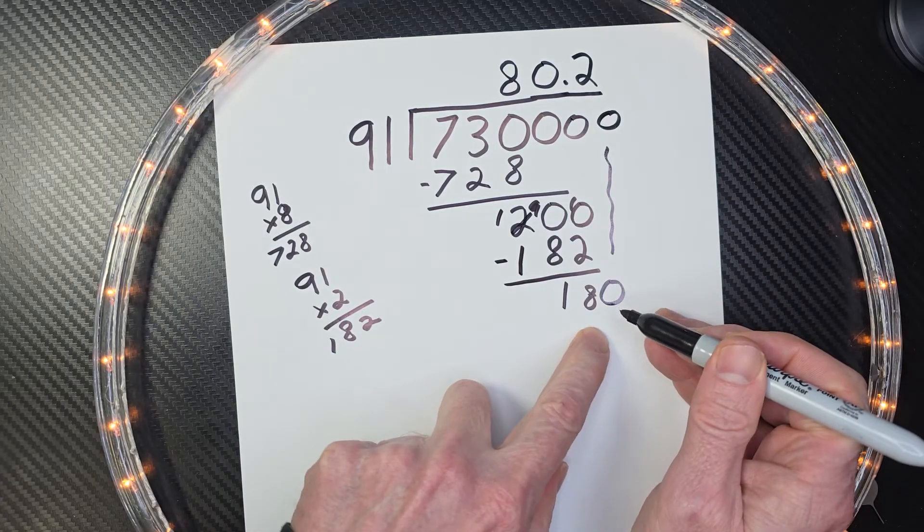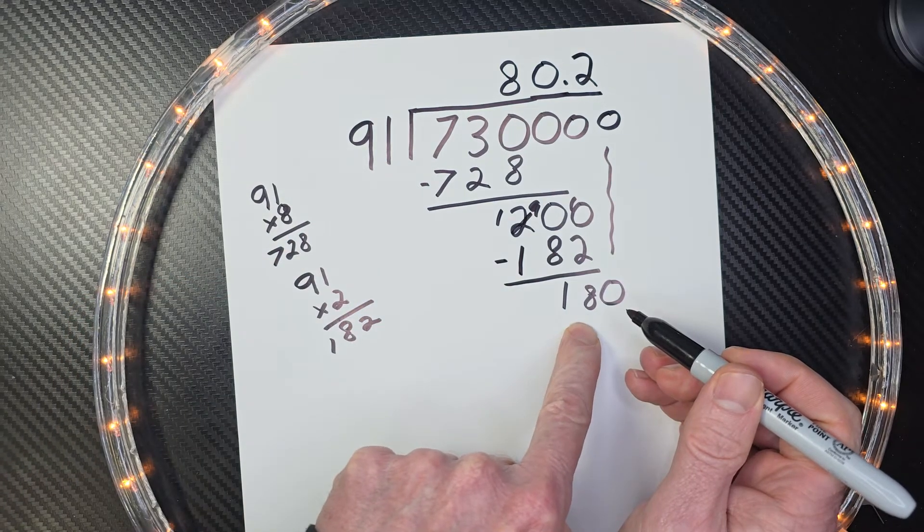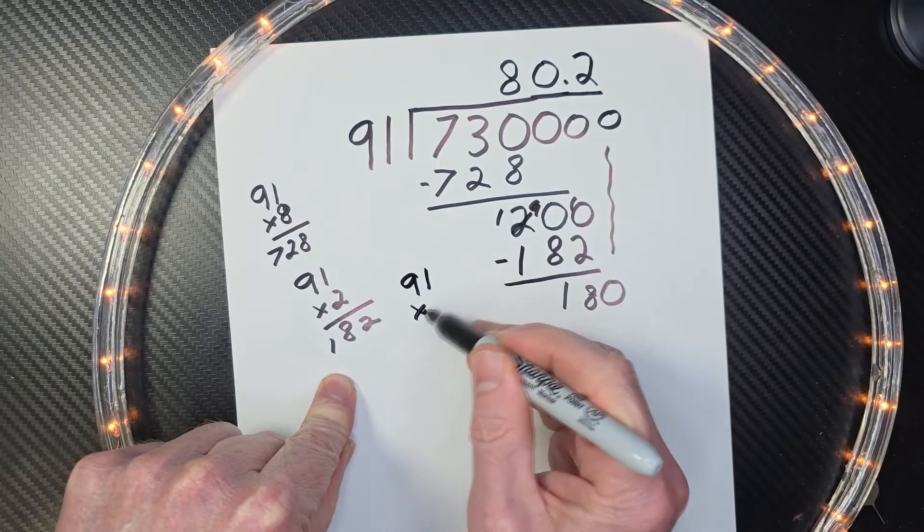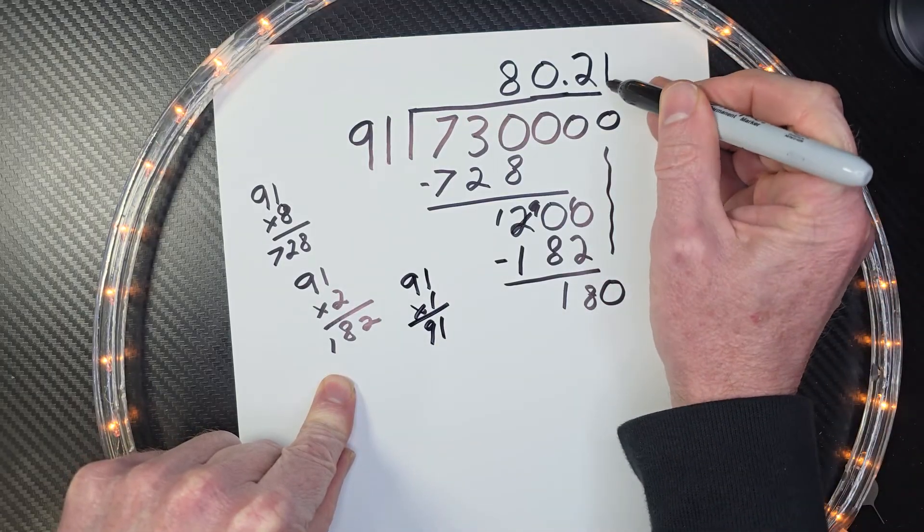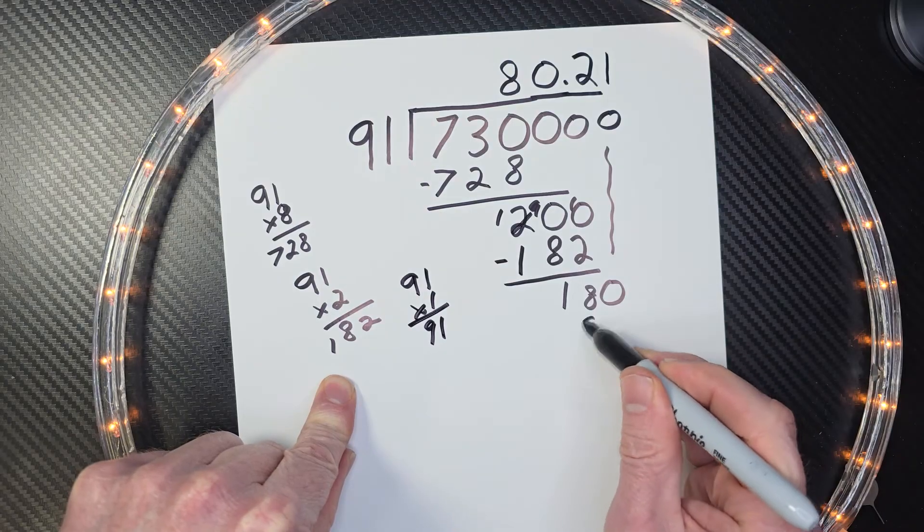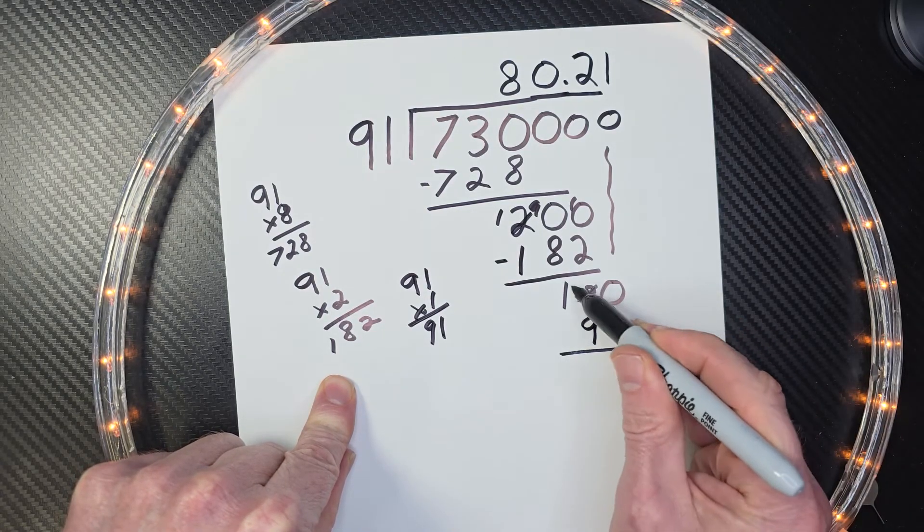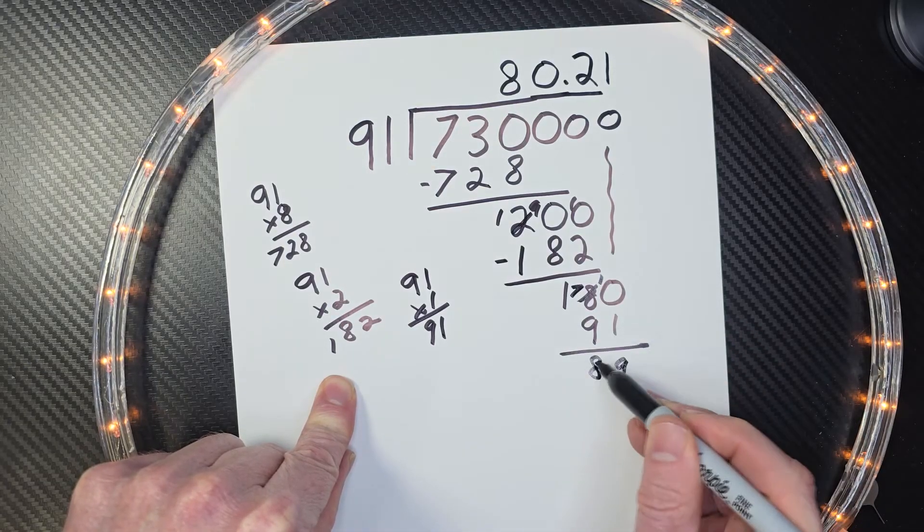So now I have 180. So how many times can I put 91 into 180? I can only put it in one time. So 91 times 1 is 91. So I put the 1 right here, 1 times 91, and then go ahead and subtract. This would be 7, this will be 10, 9, and then 89.